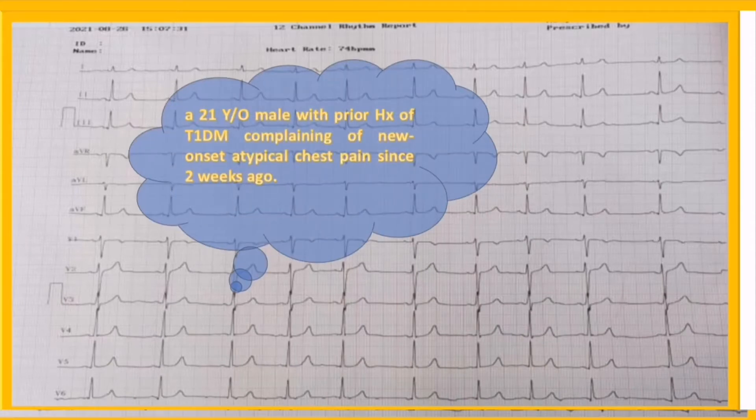Today's strip is from a 21-year-old male with a prior history of type 1 diabetes, complaining of new onset atypical chest pain since two weeks ago.